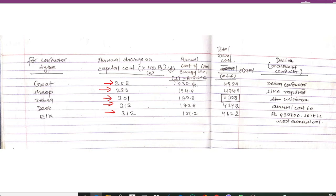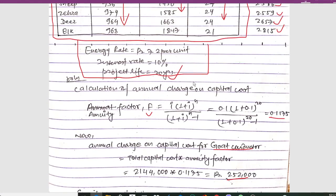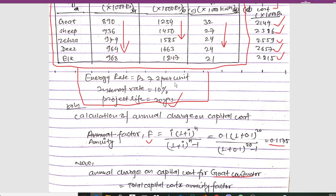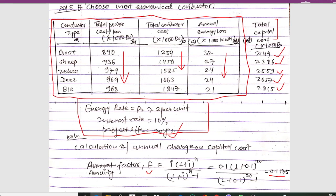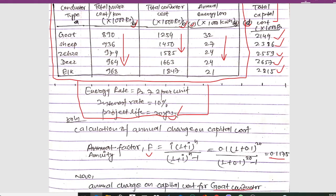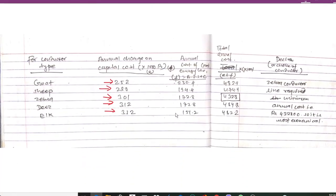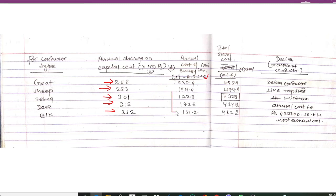Now for the annual cost of energy loss. Using the energy rate of 7.52, and denoting the columns as A, B, C, and D respectively — the annual cost of energy loss equals 7.5 multiplied by column C. For Goat conductor we get 232.4, and for Sheep we get 194.4. Similarly, the respective values are calculated for the other conductors.